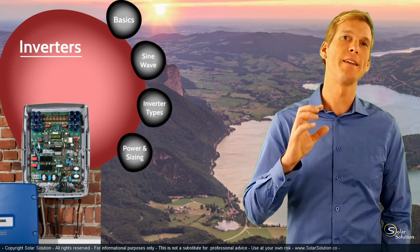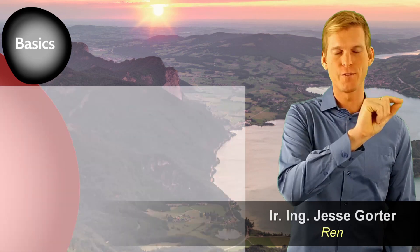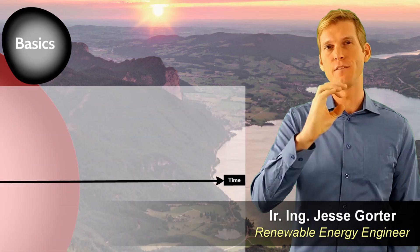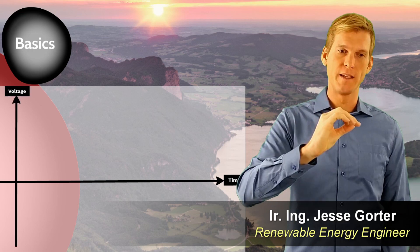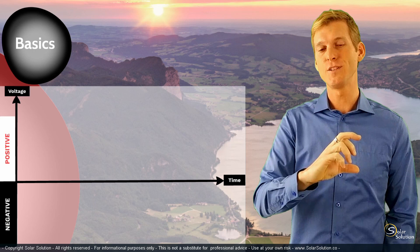In order to explain this topic easily, I'm going to draw a simple graph. On the horizontal axis, we have the time. On the vertical axis, we have the output voltage, whereby the top part is positive voltage and the lower part is negative voltage.